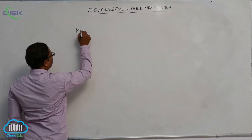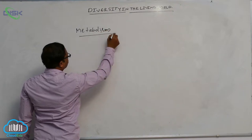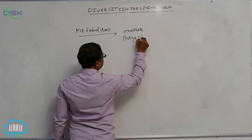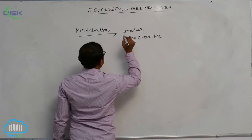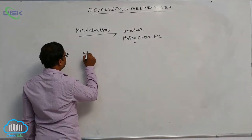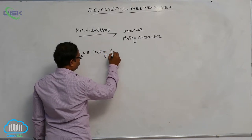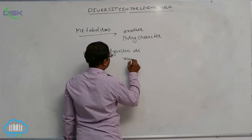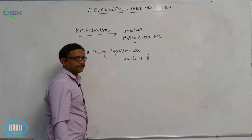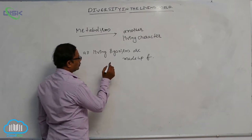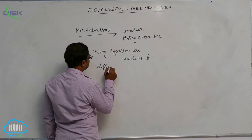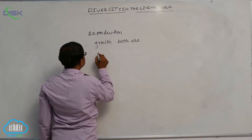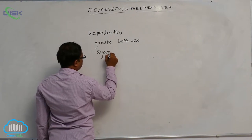After that, another living character is metabolism. All living organisms are made up of different chemicals. Growth and metabolism — both are synonymous characters.